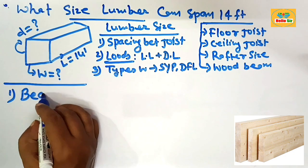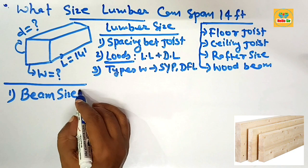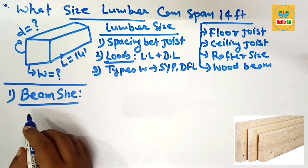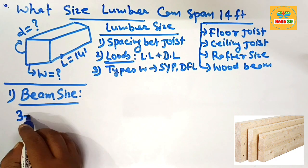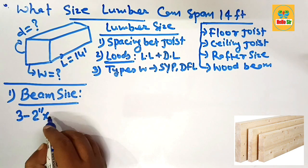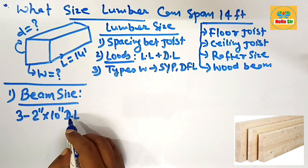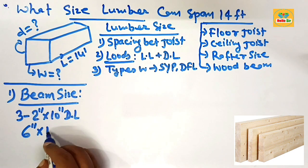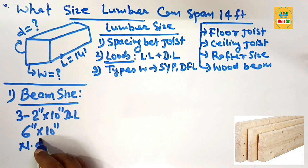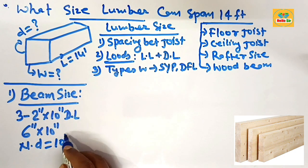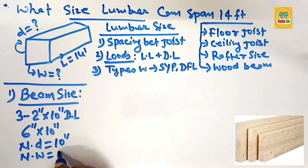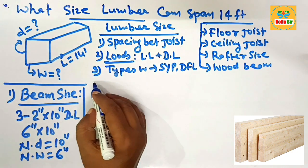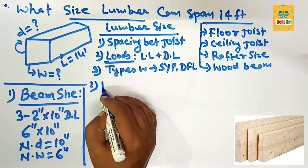For the beam size required to span 14 feet, you can use three pieces of 2-inch by 10-inch dimensional lumber as a wood beam. This can also be written as 6-inch by 10-inch, where the nominal depth of the beam is 10 inches and the nominal width is about 6 inches.